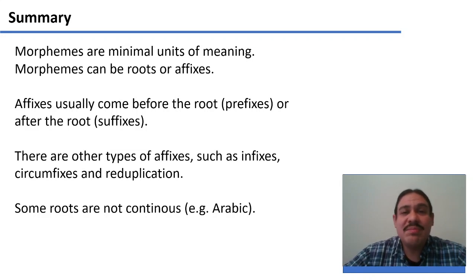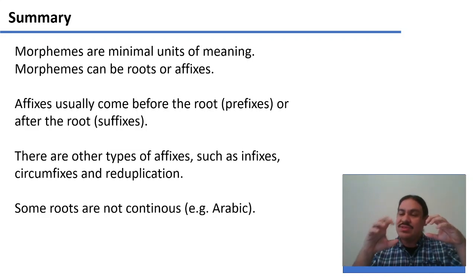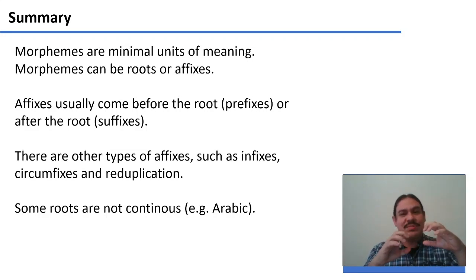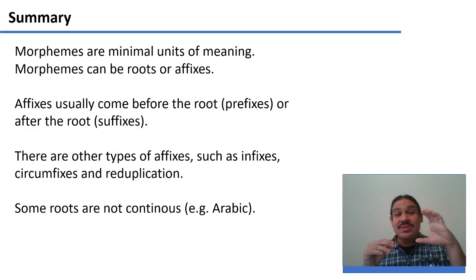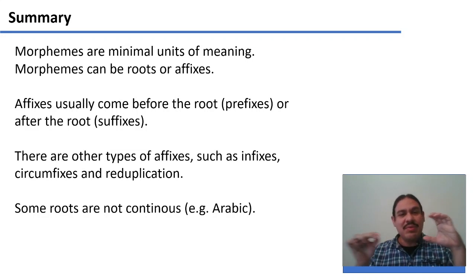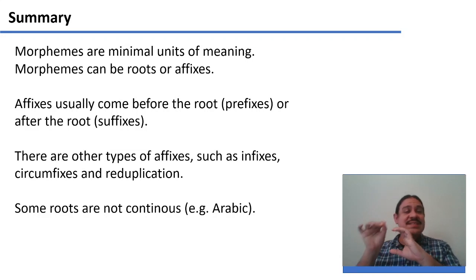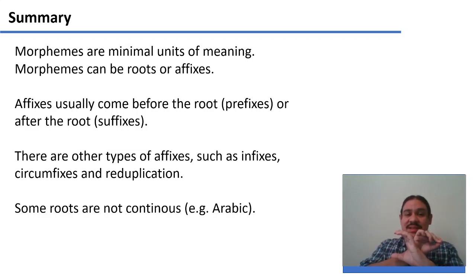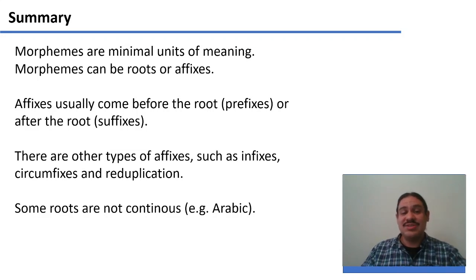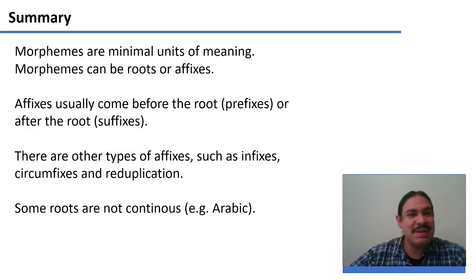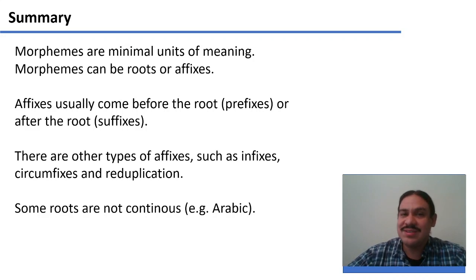In summary, morphemes are minimal units of meaning. A word can have multiple morphemes, each adding some gradation of meaning. There are roots, which carry the core meaning, and affixes, which add grammatical meaning. Affixes before the root are prefixes; after the root, suffixes. There are also infixes, circumfixes, and reduplication. Some roots, like those in English, Spanish, and French, are continuous; others, like those in Arabic, are discontinuous.